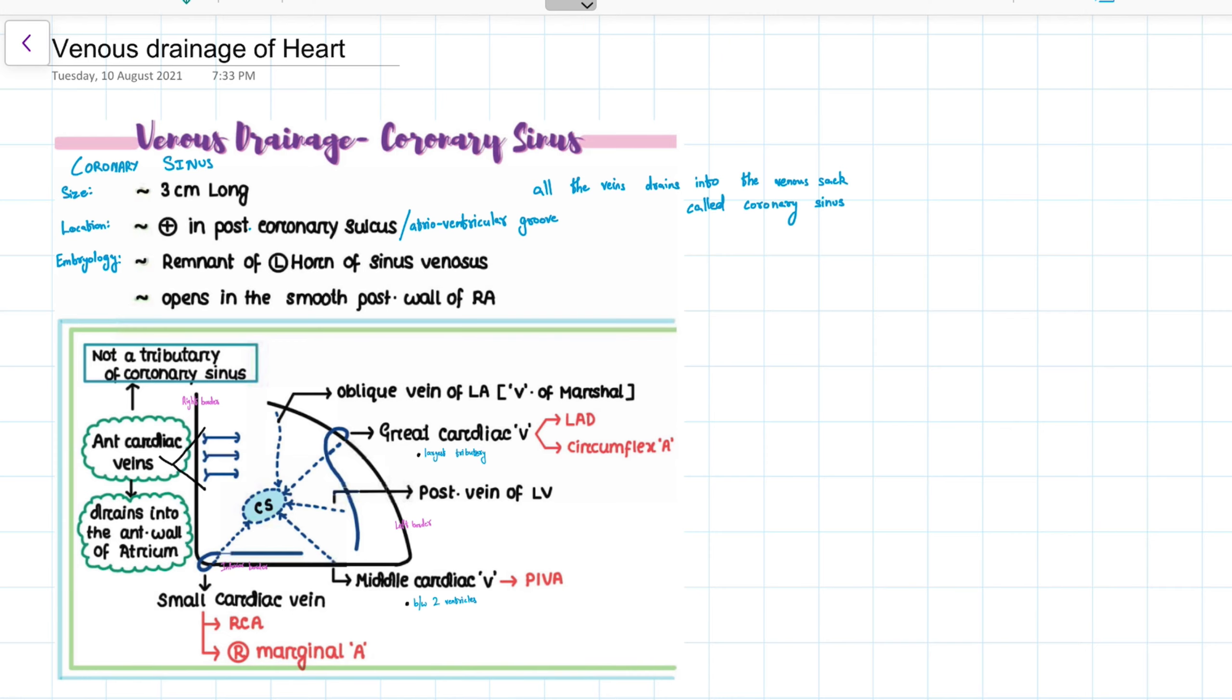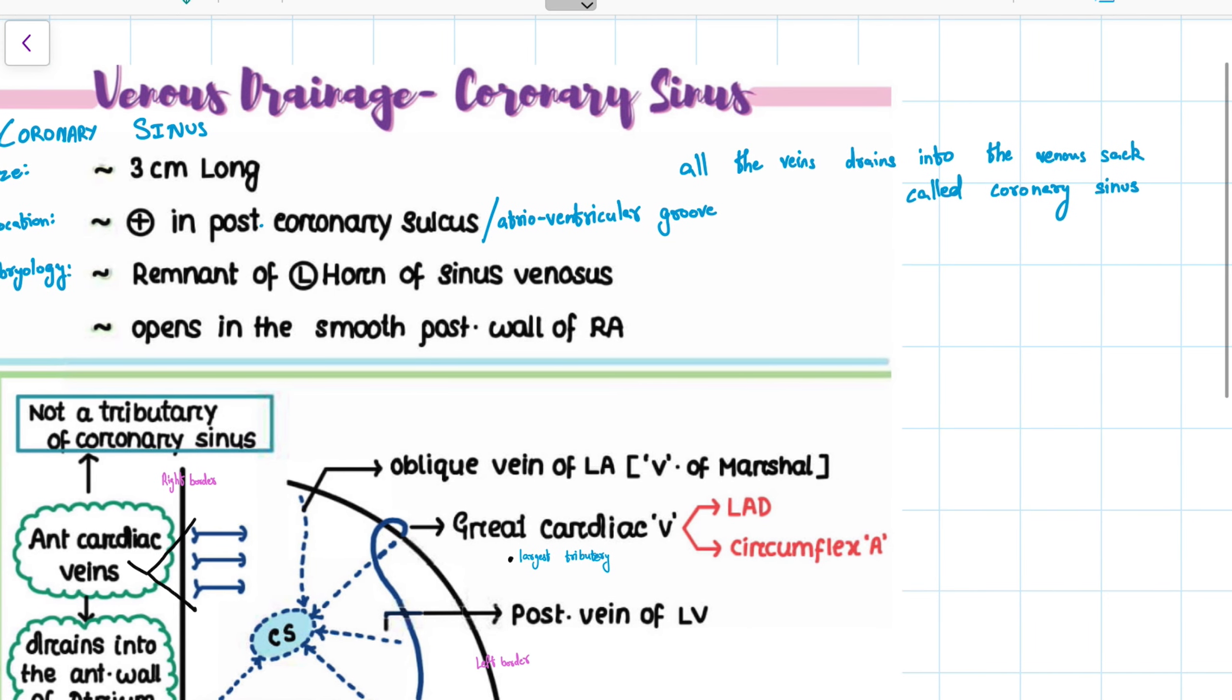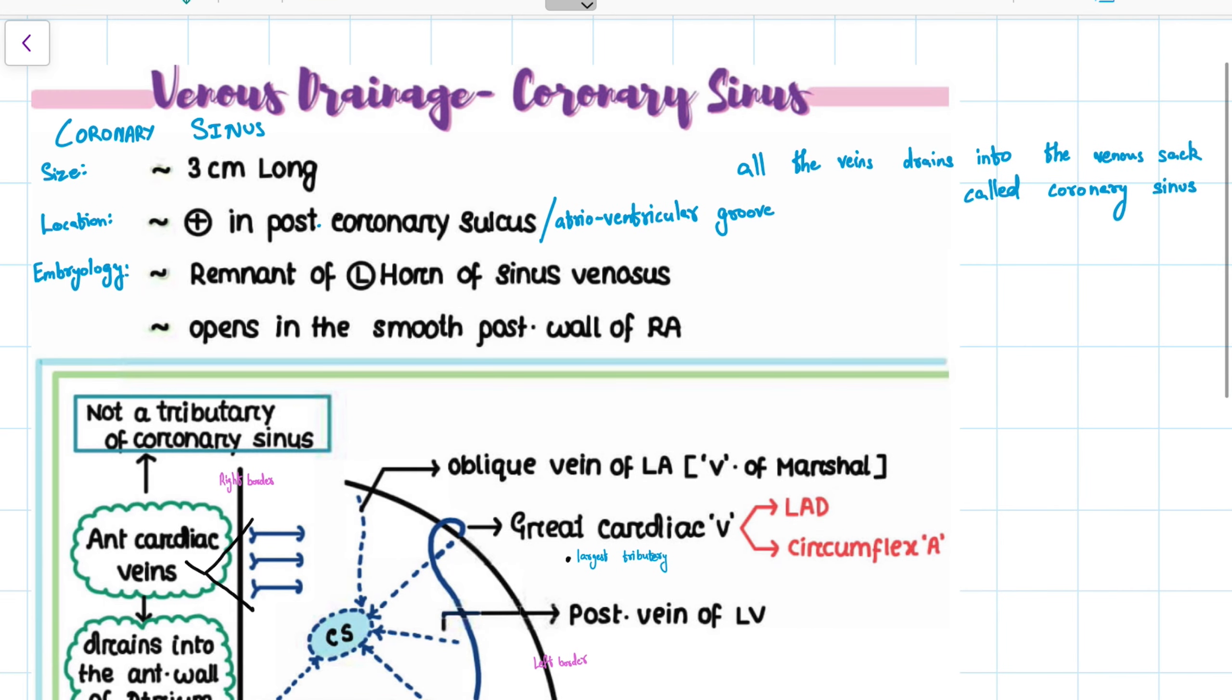The coronary sinus basically drains the venous blood of the heart. And it is one of the most important structures. And all the veins present in the heart drain into the venous sac, called as the coronary sinus. There are a few exceptions though.